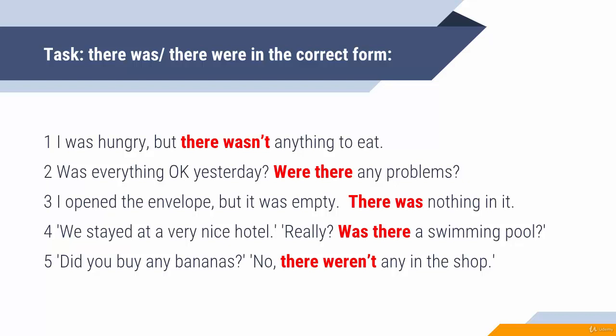After but, you need the opposite structure of the first one. The word anything always goes with the singular verb, so: there wasn't anything to eat. Was everything okay yesterday? Were there any problems? Problems is plural, so you need were there, not was there. I opened the envelope, but it was empty — there was nothing in it.